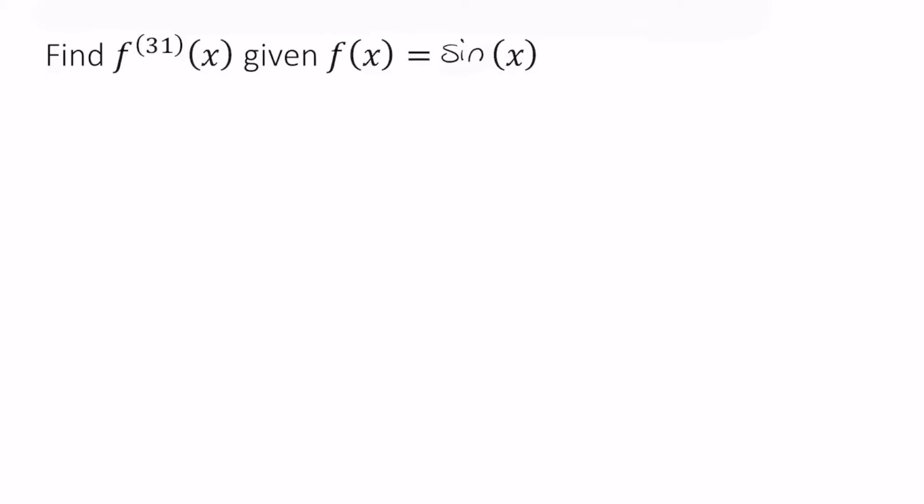We're starting with sine x. f(x) equals sine x. The first derivative of sine x is cosine x. The second derivative of sine x is negative sine x. The third derivative of sine x is negative cosine x.